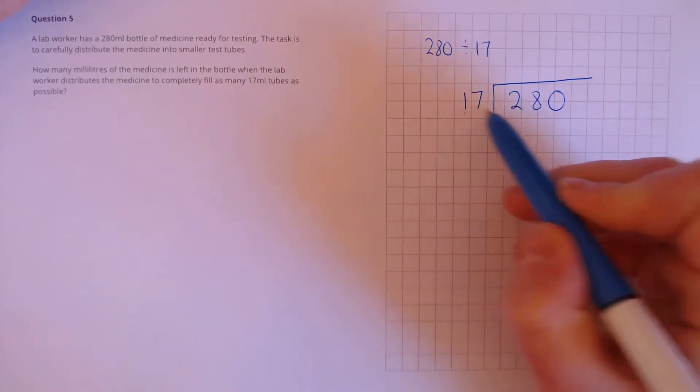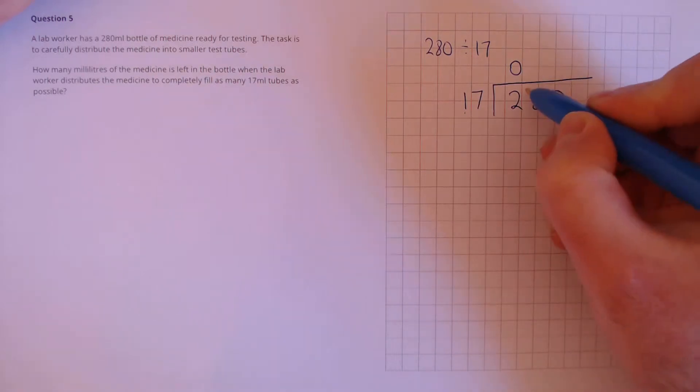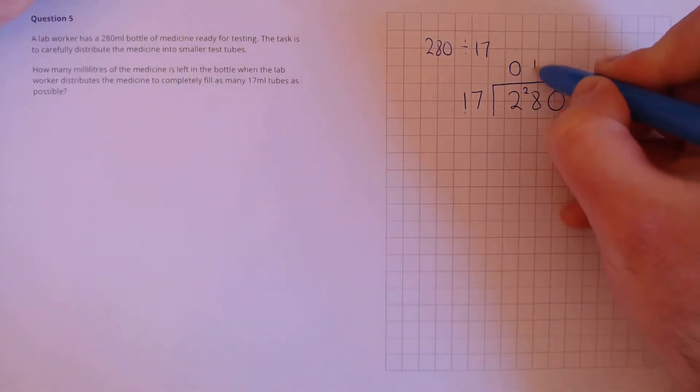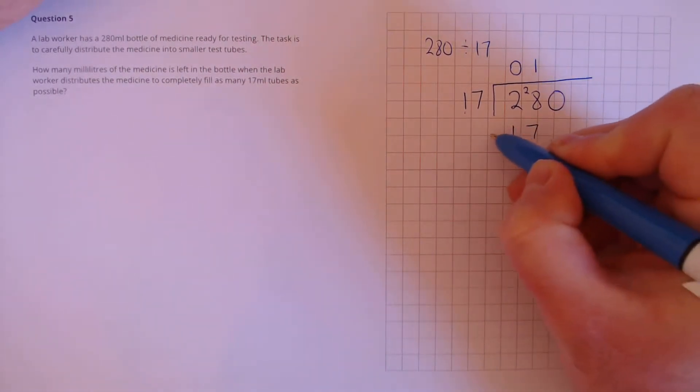First we see does 17 go into 2? No it doesn't. So we put a zero here and we look at 17s into 28. That goes in once and then we'll take away 17 from 28.